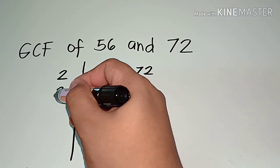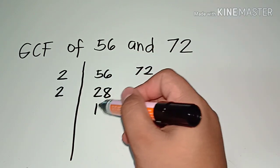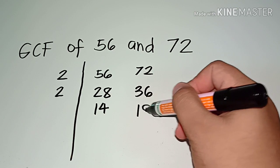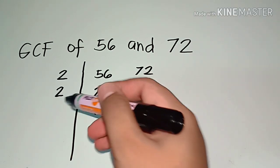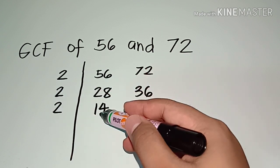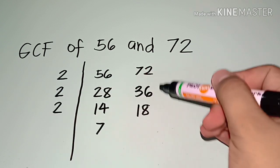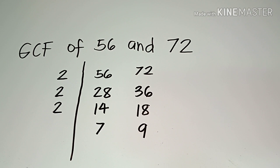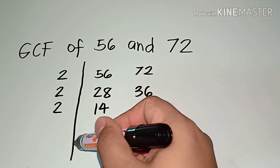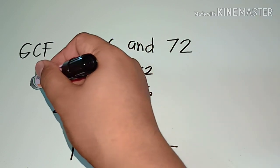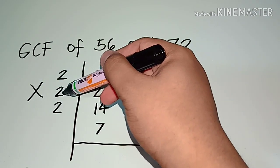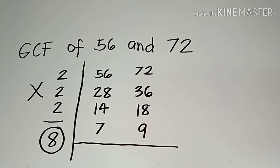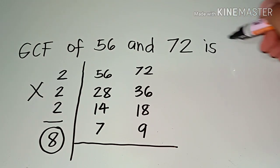Both are still even numbers, so we can divide by 2 again. 28 divided by 2 is 14, and 36 divided by 2 is 18. We can still simplify both 14 and 18 by 2 again. 14 divided by 2 is 7, and 18 divided by 2 is 9. We cannot divide 7 and 9 by a common number, so we stop there and multiply the numbers on the left side. 2 times 2 is 4, times 2 gives you 8. So the greatest common factor of 56 and 72 is 8.